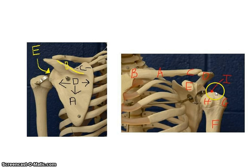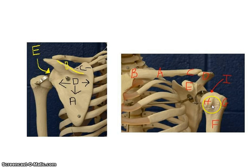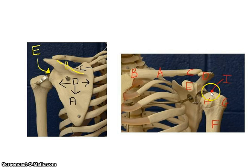The humerus articulates here with the head at the glenoid cavity. The greater tubercle is lateral and the lesser tubercle is on the anterior portion of the humerus. We'll go over that in more detail on the next slide.